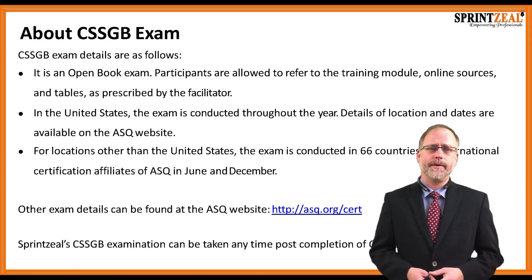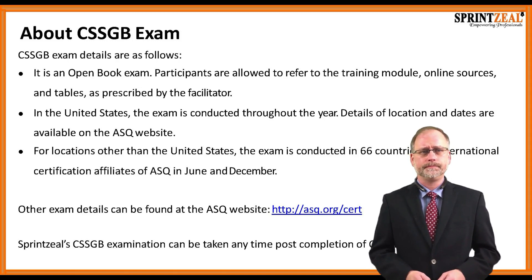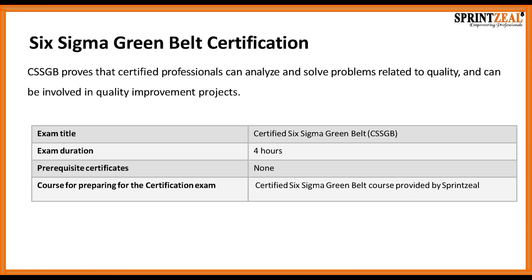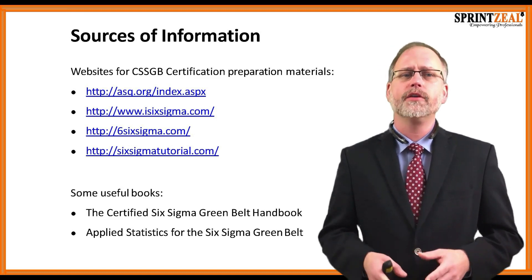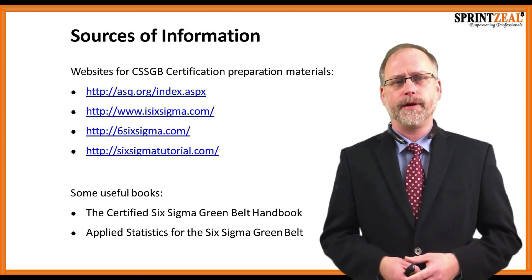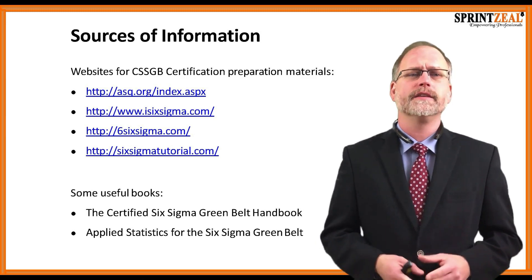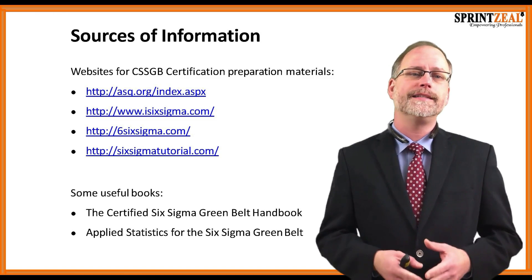The Sprintzeal Six Sigma Greenbelt examination can be taken at any time once you've completed the course. Six Sigma Greenbelt certification proves that certified professionals can analyze and solve quality-related problems and participate in quality improvement projects. The exam is called the Certified Six Sigma Greenbelt test, lasts approximately four hours, and has no prerequisites. For preparation, we recommend using Sprintzeal's certified materials as well as this course. There are four recommended websites as well as two books: the Certified Six Sigma Greenbelt Handbook and Applied Statistics for the Six Sigma Greenbelt.